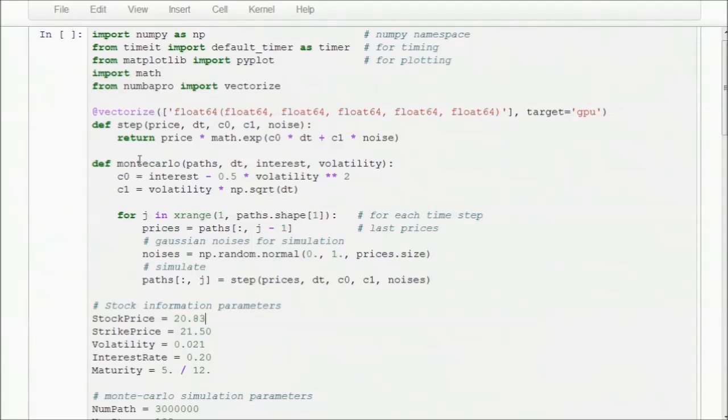The Monte Carlo Options Pricer algorithm starts with an initial options price, and then does 100 time steps, introducing random noise each iteration to create 3 million unique paths the options could take. The code where we'll be spending all of our time is this Monte Carlo Function. The first two lines set up constants to be used later in the algorithm. The for loop then iterates over each of our 100 time steps, gets the last set of prices, creates random noise for each path for each iteration through the for loop, and finally calls the Step Function to calculate the next round of prices.